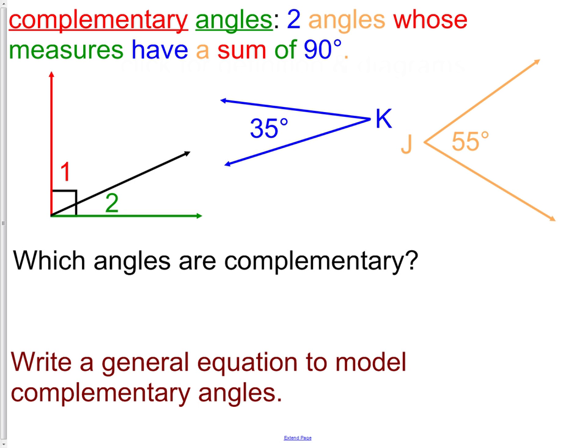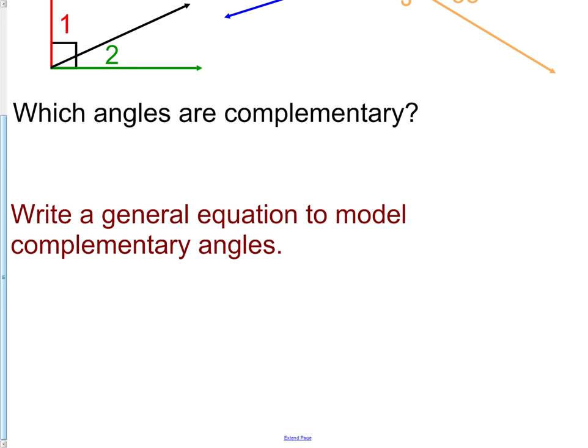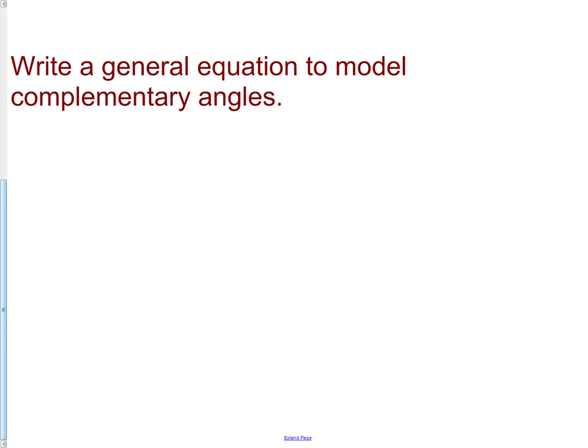The two pictures to the right, angle K and angle J, if we added those two together, we would also get 90 degrees. So we have two examples, one where the angles are in one picture, and one when they're separated into two pictures. So when we're talking about complementary angles, they do not have to be in one picture. They can be separated apart. Now on the bottom of the screen, I have a statement here. Write a general equation to model complementary angles. What I'm asking you to do is write this: angle one plus angle two equals 90. That is the equation we would use every time for complementary angles.